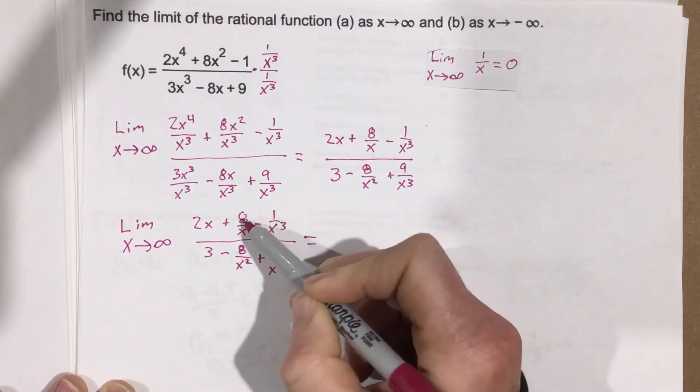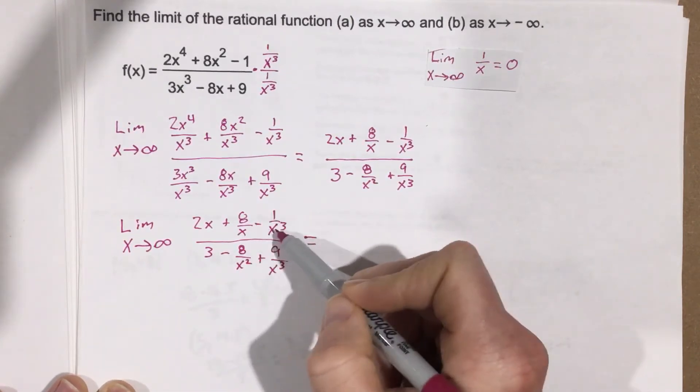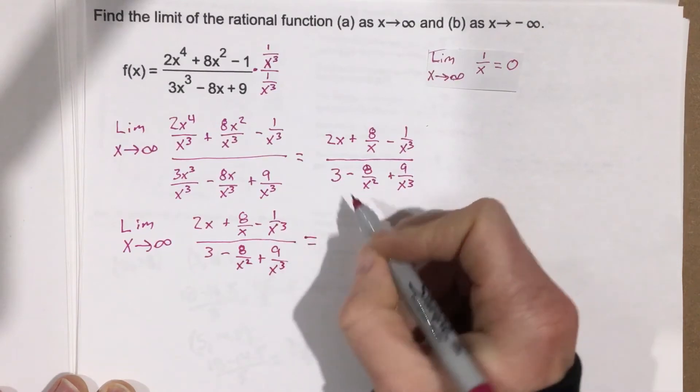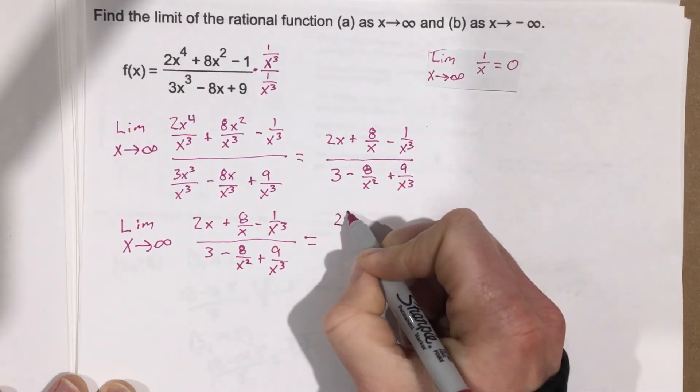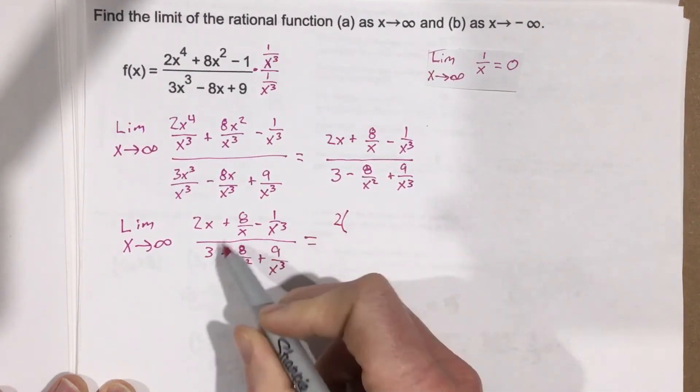Well, when I plug in infinity into any of these fractions, the denominator is really large, meaning these are all going to 0. So I end up with 2, and then let's just imagine plugging in a really large number here.